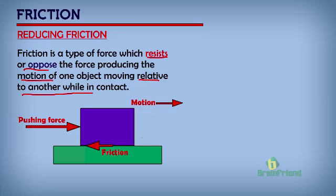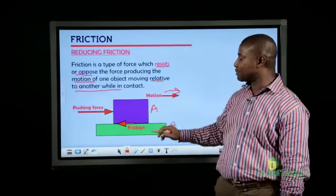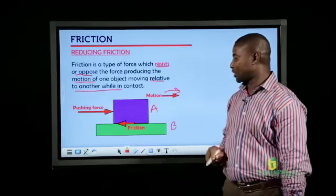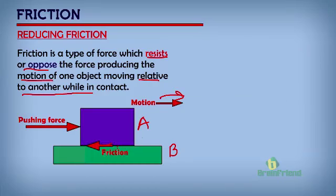Let's use this picture here as an illustration to better understand how friction works. Let's take this top object as A and this to be a table — let's call it B. Object A is on the surface of table B. We have a push force here moving this object in this direction, while friction, which is opposing or resisting this motion, will be moving opposite to the push force that is being applied to object A, thereby resisting the motion of object A.